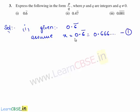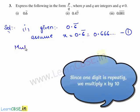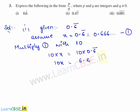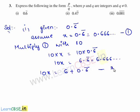Let this be equation 1. Since in the given decimal expansion one digit is repeating, we multiply equation 1 with 10. This gives 10x is equal to 10 times 0.6 bar, which gives 10x is equal to 6.6 bar, that is 6.666 and so on. This can be written as 10x is equal to 6 plus 0.6 bar. Consider this as equation 2.